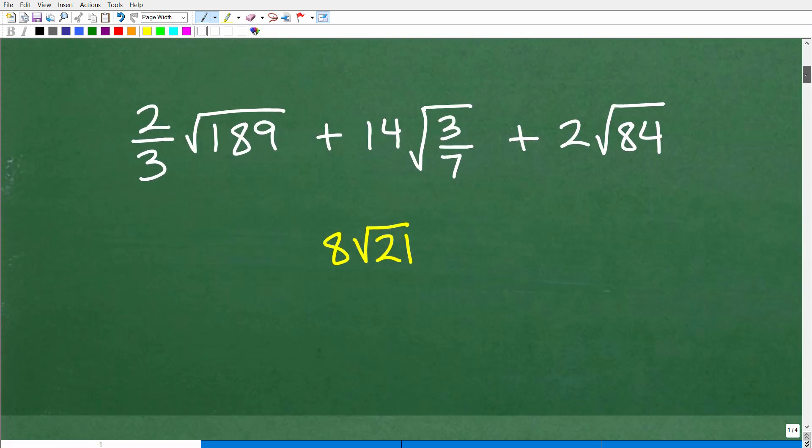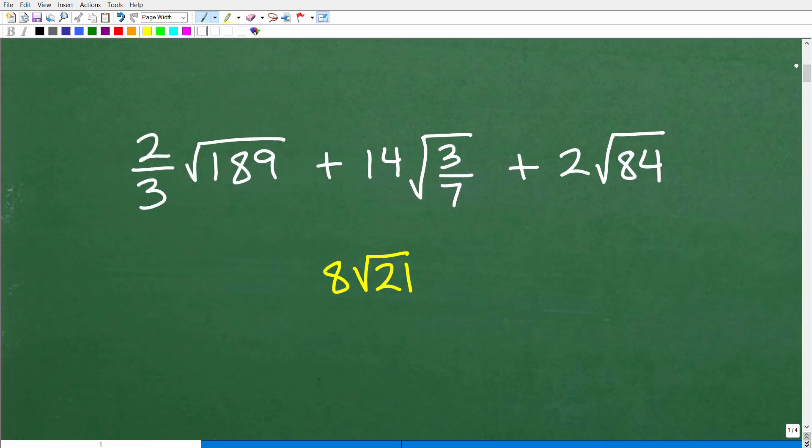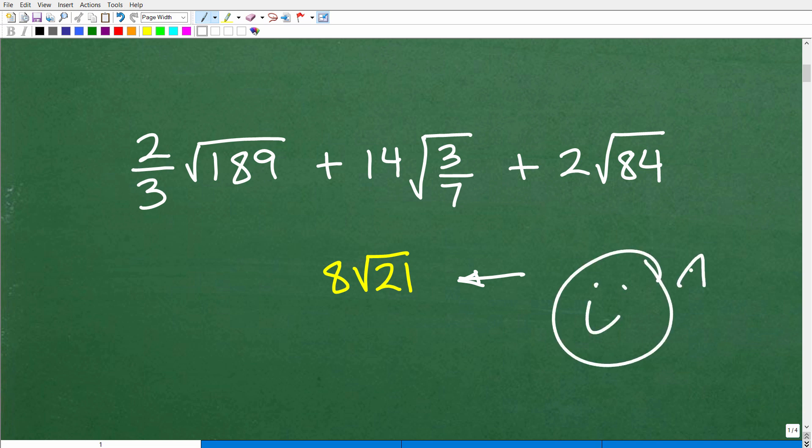As promised, I'm going to show you the solution. And there it is, 8 times the square root of 21. This is the final answer. So if you got this answer, I must go ahead and give you a nice little lovely happy face with an A+. If you're totally confused, well, let's just kind of give you a blank face right now and get you to look like this.